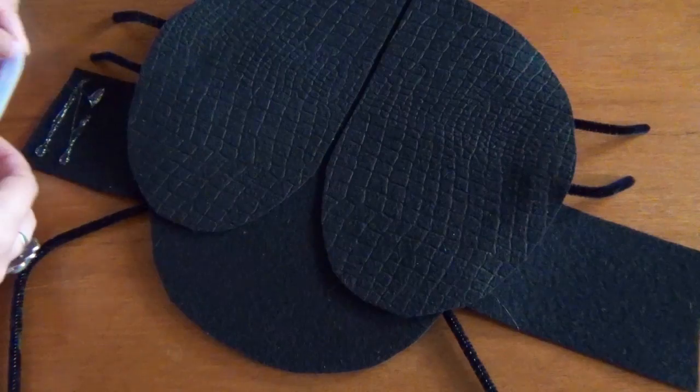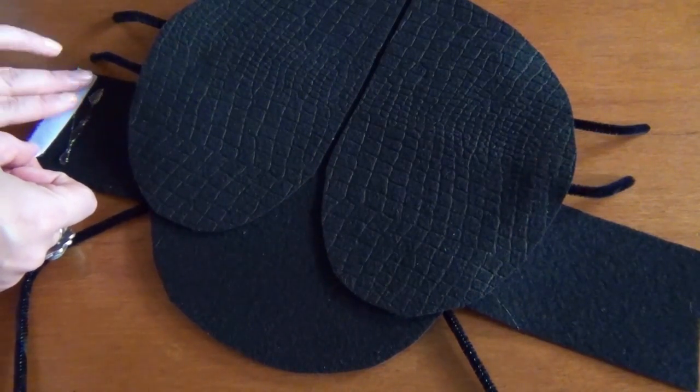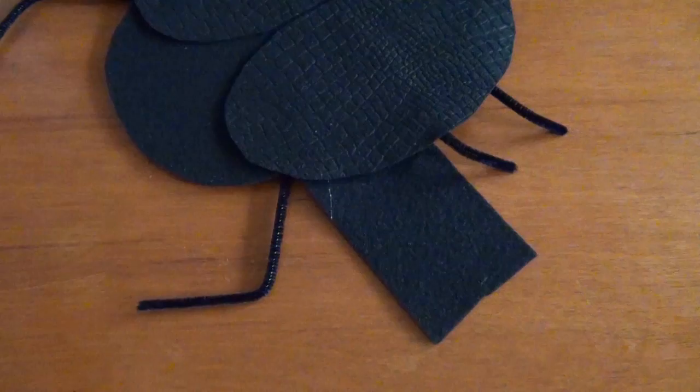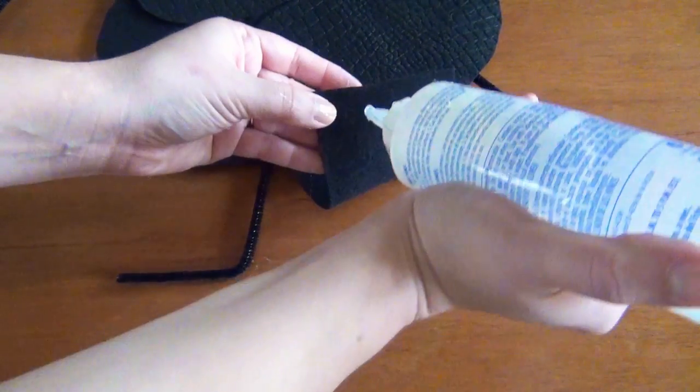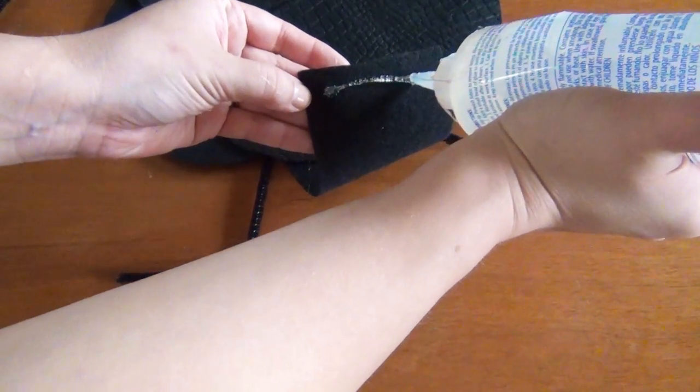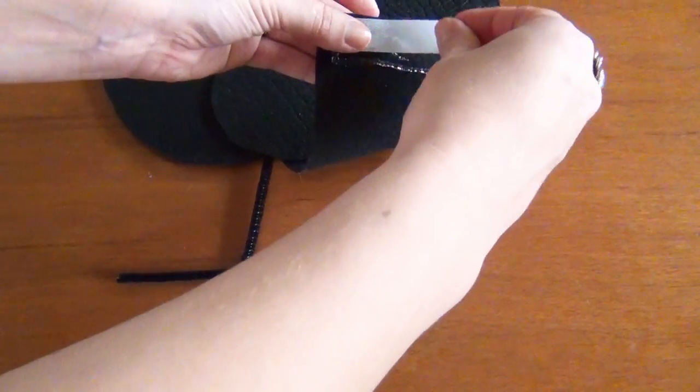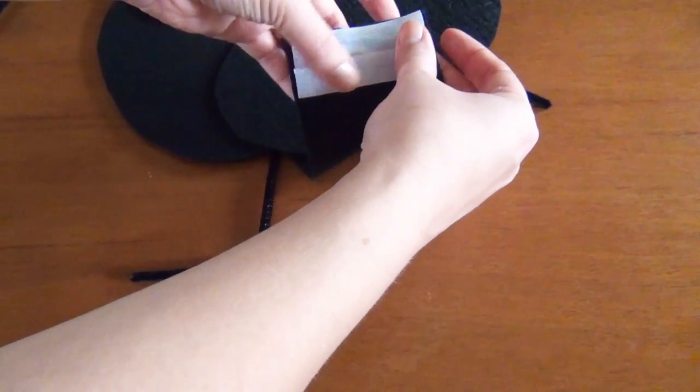And then finish it off with your velcro strips. Again I'm doing loops on one side, hooks on the other, and one side of velcro is facing up and the other side of velcro is facing down so that when you wrap it around the dog they'll actually be able to adhere to each other. And that is the finished flea costume.